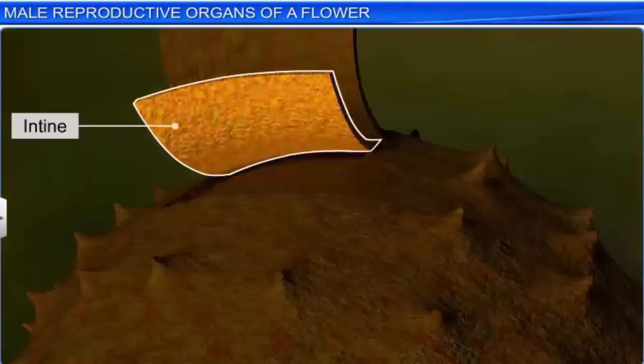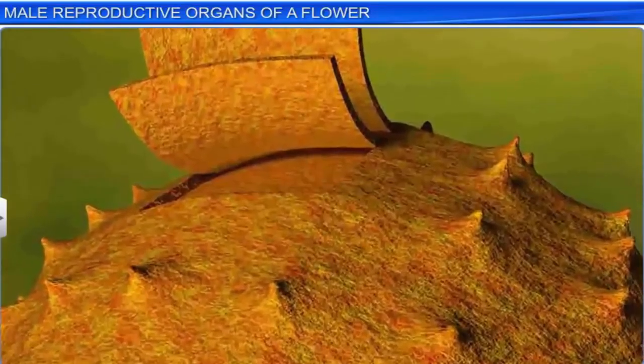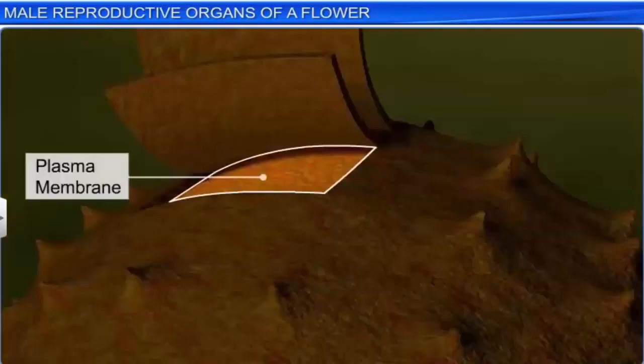Intine, on the other hand, is a thin and continuous inner layer of wall composed of cellulose and pectin. On the inner side of the intine is the plasma membrane that surrounds the pollen grain's cytoplasm.